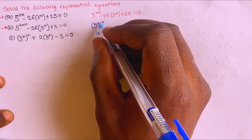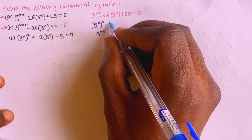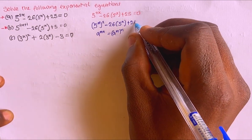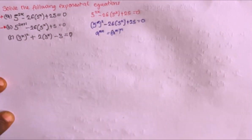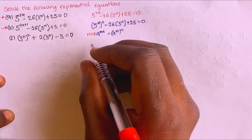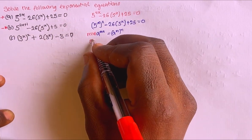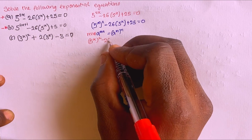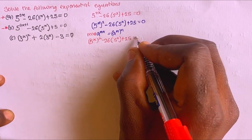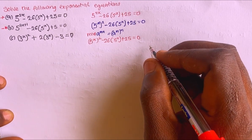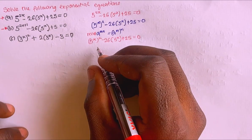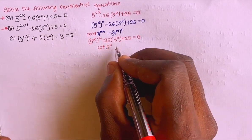So here I'm going to have (5^x)^2 minus 26 into brackets 5^x, plus 25 equals 0. So now I'm going to bring this out: (5^x)^2 minus 26·(5^x) plus 25 equals 0.